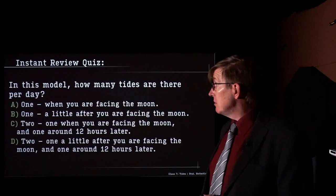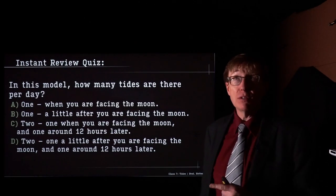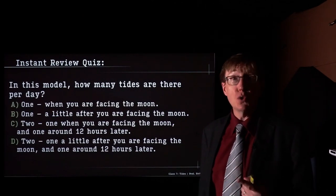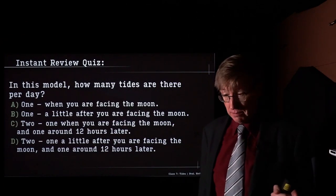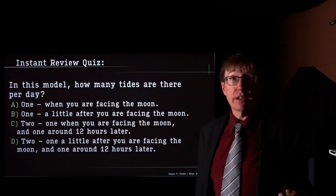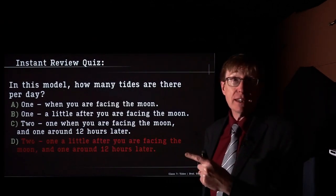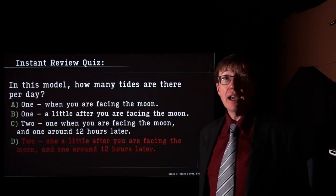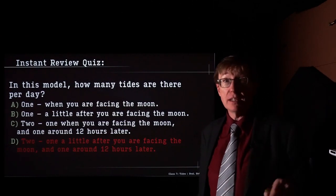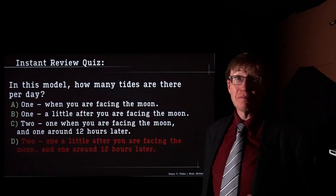Instant review quiz: in this model, how many tides are there in a day? The answer is D — there are two high tides. There's one sort of facing the Moon and one sort of facing opposite the Moon, but they are lagged from each other because of that friction effect — the same effect that's slowing down the Earth so the day gets longer and longer, and which caused the Moon to stop rotating relative to the Earth.